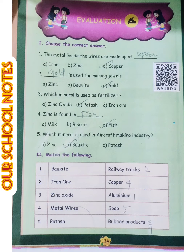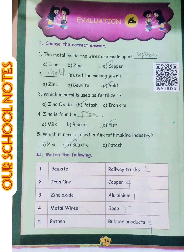Section 1: Choose the correct answer. First question: The metal inside the wires are made up of — the answer is option A: Copper. Second one: This is used for making jewels — the answer is option A: Gold.